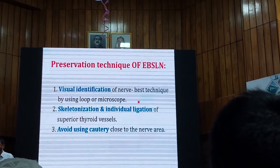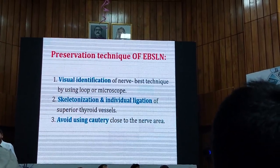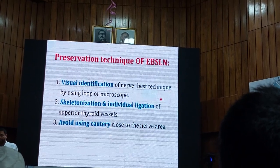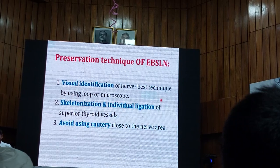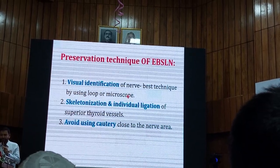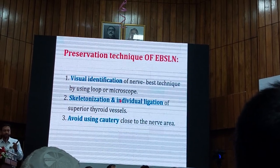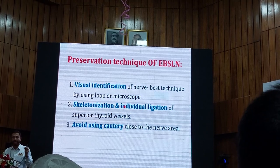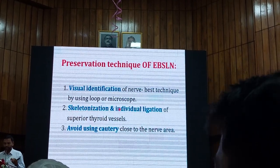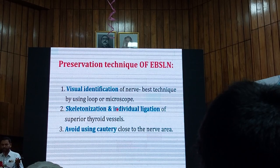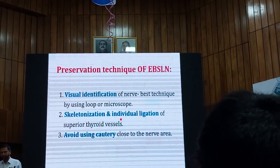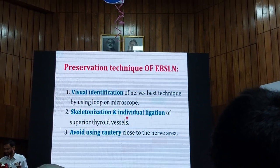The technique for external branch preservation: number one is visualization — you should see the EBSLN. You can use a loupe or a microscope, but the loupe is not an alternative to the microscope. If you do not have a microscope or loupe, you can dissect the upper pole individually, ligating each upper pole vessel individually, and automatically you will see the EBSLN. You should also avoid using cautery in the rib space or in the cricothyroid muscle, as you may injure the EBSLN without knowing you are damaging it.